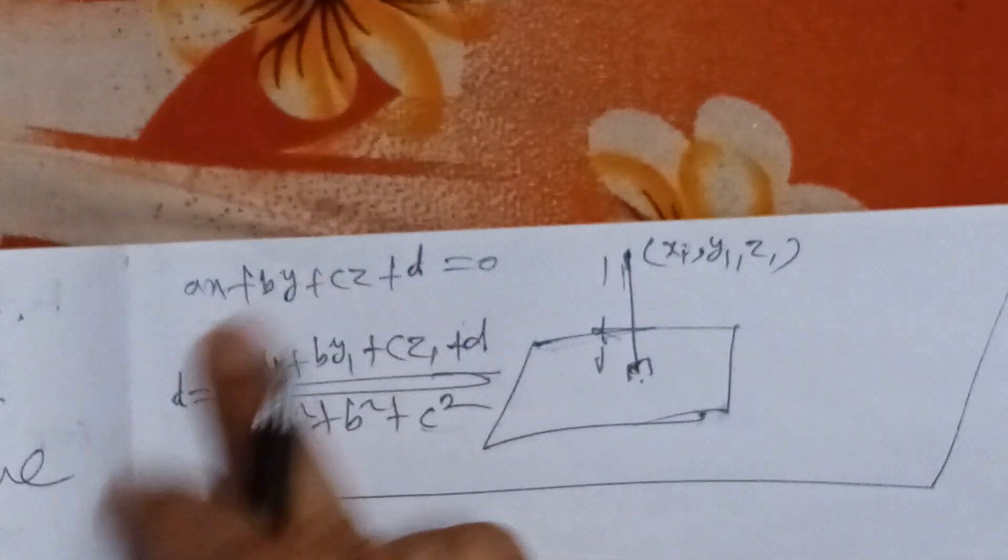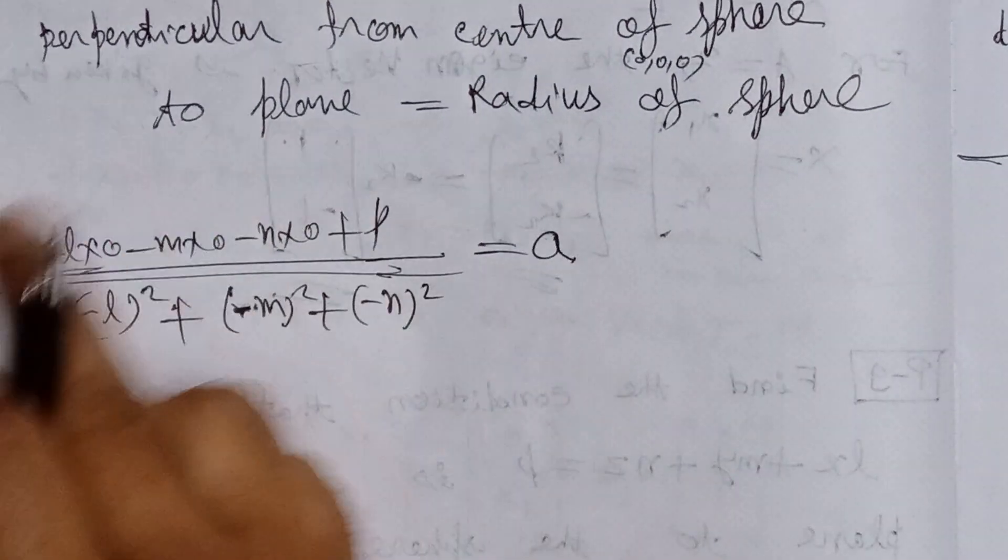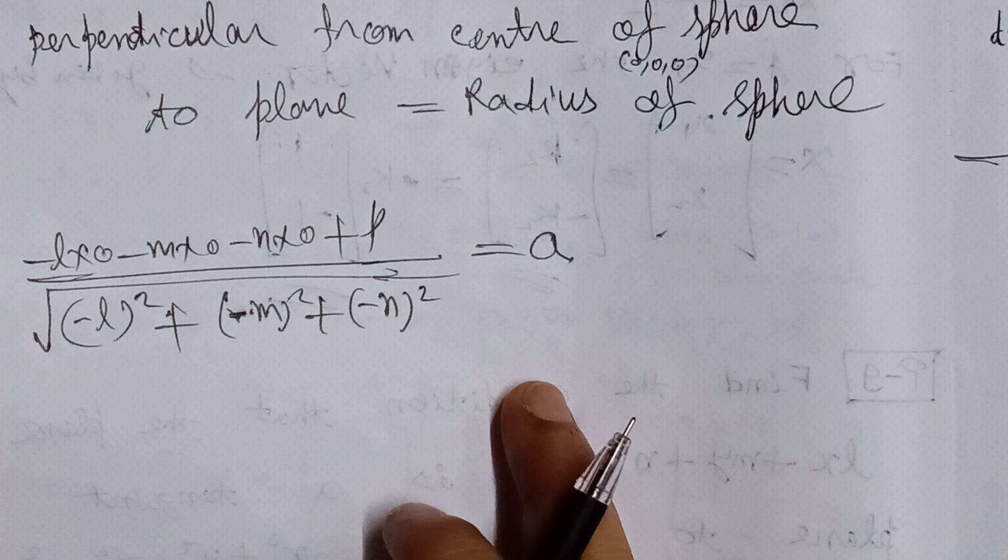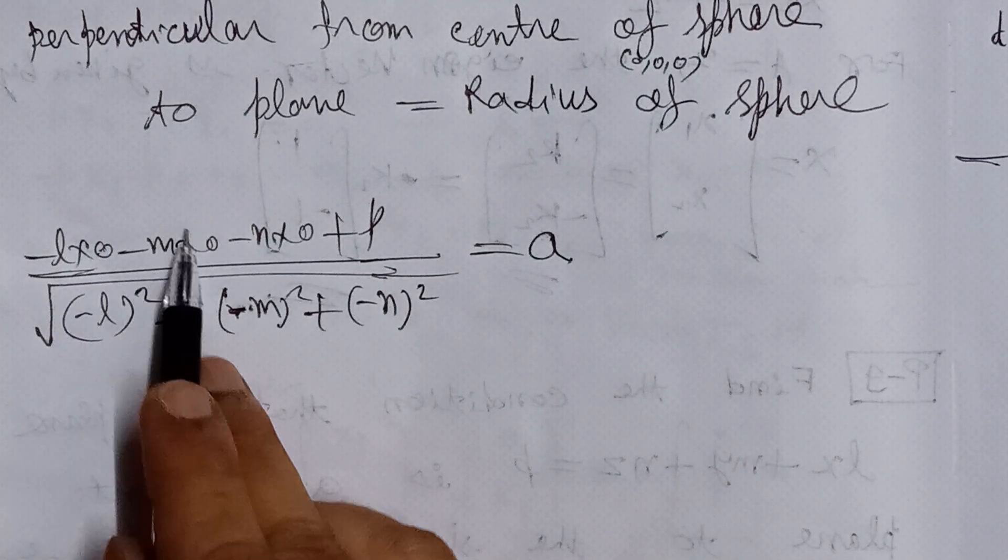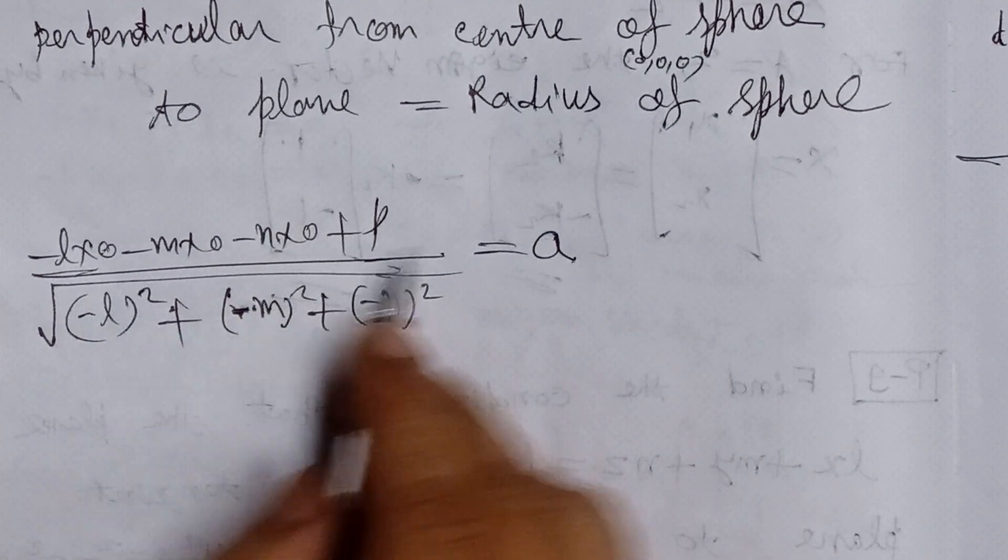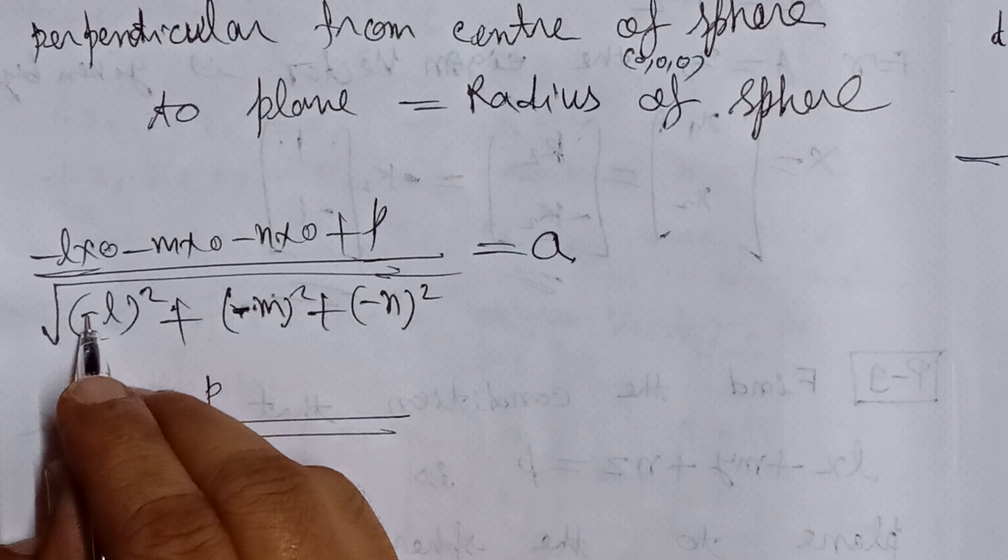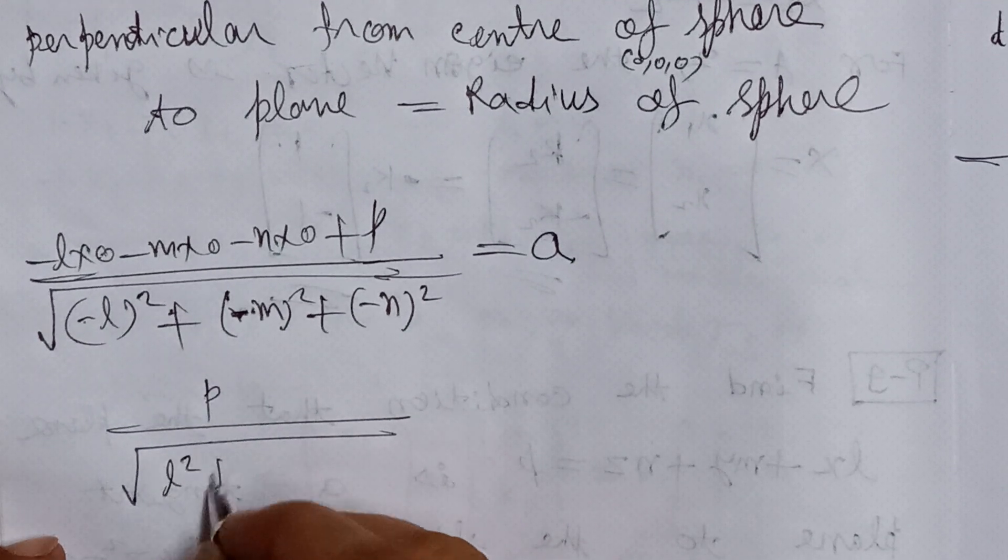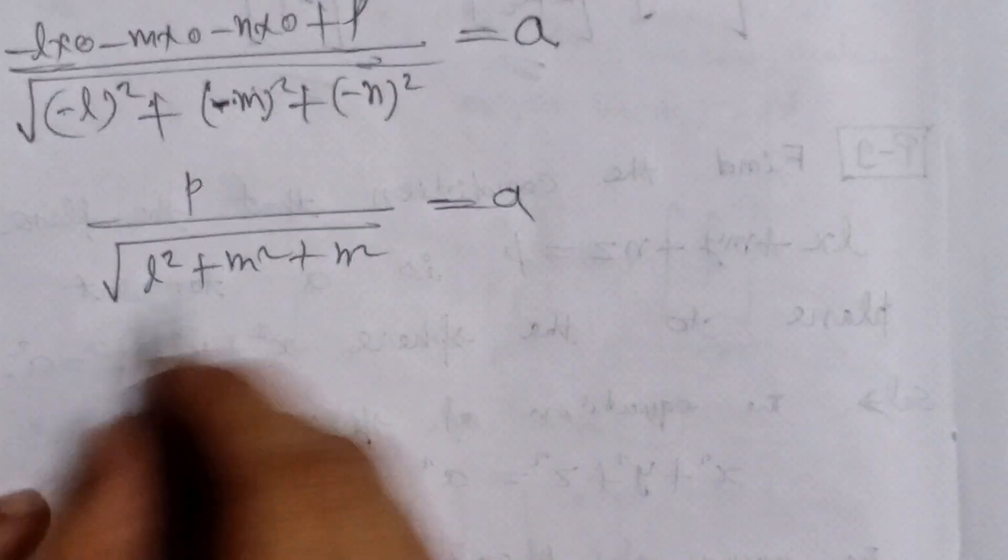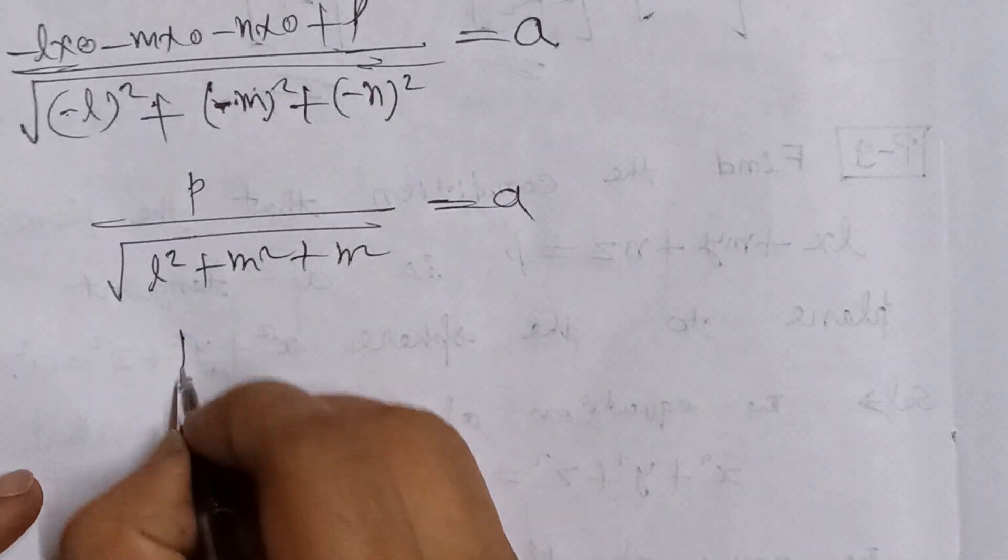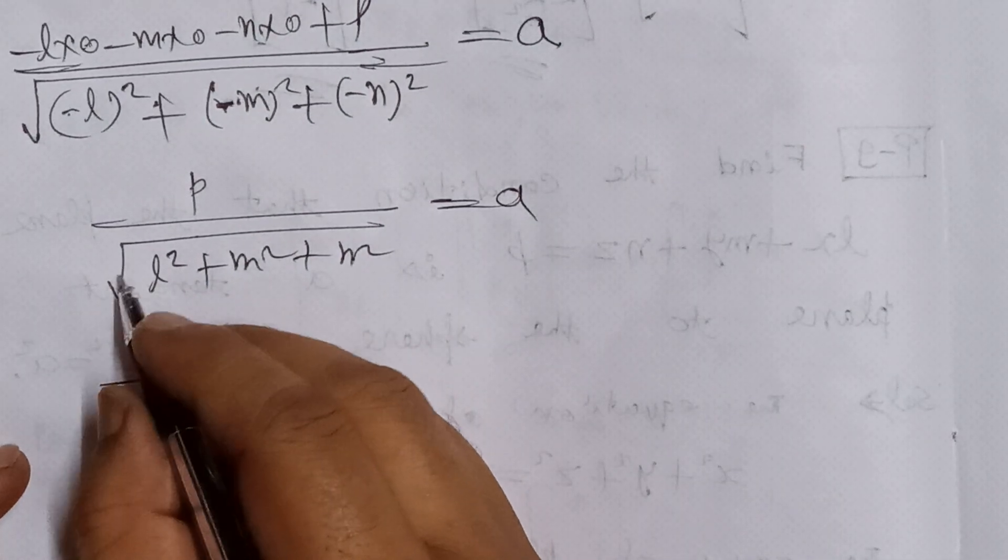I apply this formula to the left hand side. We can simplify this because zero times any value is zero, so all these three terms are zero. Therefore we get p / √(l² + m² + n²) = a.